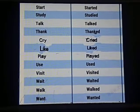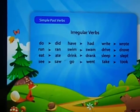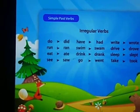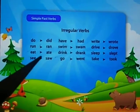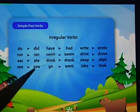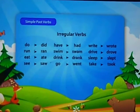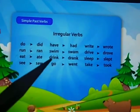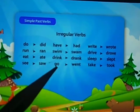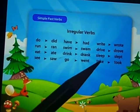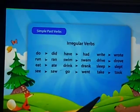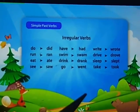Some verbs change in their form to show the action has already taken place. Let's see some other examples. There are some action words whose spelling changes in a different manner to show the action has already been done: do → did (without D or ED), run → ran, eat → ate, see → saw, have → had, swim → swam, drink → drank, go → went, write → wrote, drive → drove, sleep → slept, take → took. These words are changing in manner.